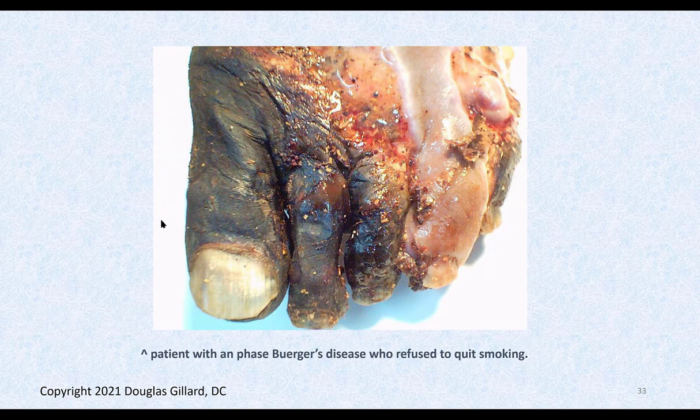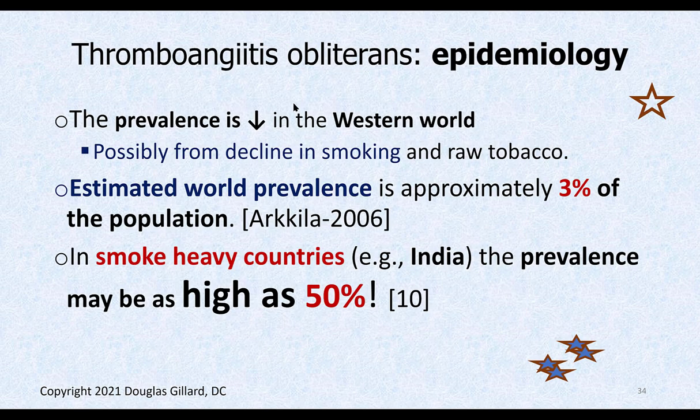Here's a person with Buerger's disease who couldn't quit smoking — it affected all the medium-sized vessels in the legs, resulting in gangrene — this has to be taken out. Prevalence is decreasing in the west, probably from a decrease in smoking; use of raw tobacco has also been associated. World population prevalence is still about 3%. In India, one study found prevalence of 50% of the population studied because smoking rates were so high.